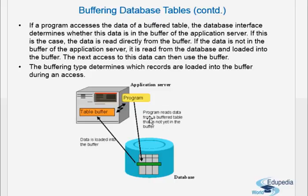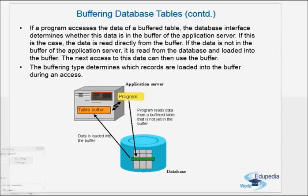Every application server instance in the SAP system has its own buffer. When you run a program for the first time from any application server, the data is fetched from the database and the table is kept in that particular application server only. When you again run that program from a different application server, it will have to access the database again.